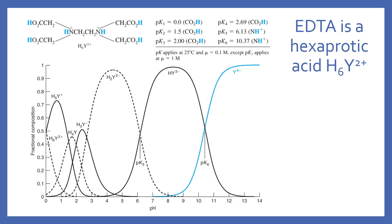If we examine the fractional composition of what form EDTA takes at different pHs, you see that when we have a high pH — above pK6 — EDTA is in its fully deprotonated form, as you'd expect at basic pH. As you shift to lower pH, we have less and less EDTA in that form, with more protons at lower pH.